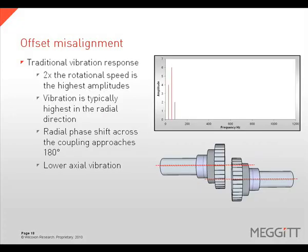Offset misalignment has traditionally been characterized as producing a vibration response at 2x rotational speed, typically highest in the radial direction. With vertical offset, the highest amplitude of 2x vibration is expected in the vertical direction; with horizontal offset, the highest amplitude is expected in the horizontal direction. However, a combination of the two types will create a vibration that is not necessarily purely directional in one measurement plane or the other.